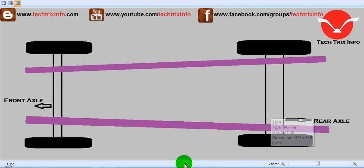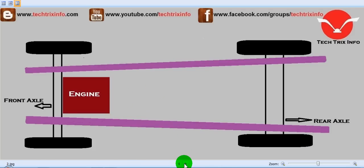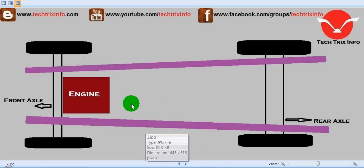First we have the engine, which provides the power or the required torque for the vehicle to move. It is the prime mover, which is the power source of the vehicle.